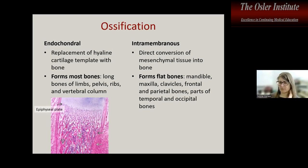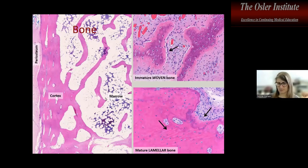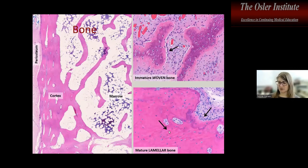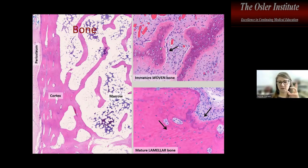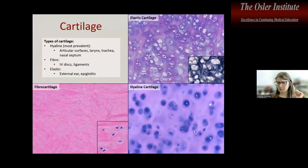Bone has a peripheral cortex and a central marrow, all formed by mature lamellar bone with nice lines, versus immature woven bone with osteoblast rimming in things like repair. Cartilage can be hyaline, which is quite common in articular surfaces, elastic — in your bendy structures like the ear and epiglottis — and fibrocartilage.